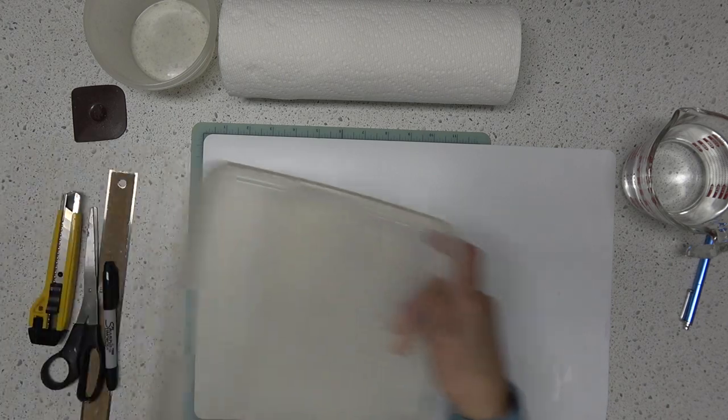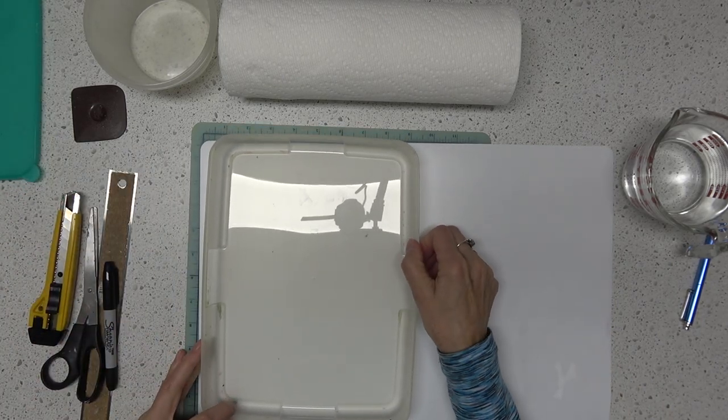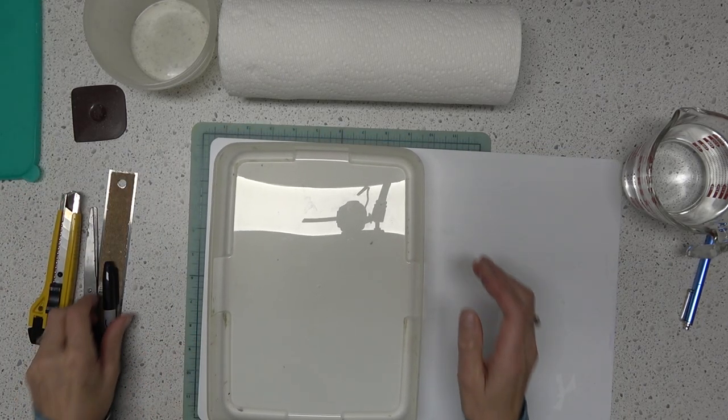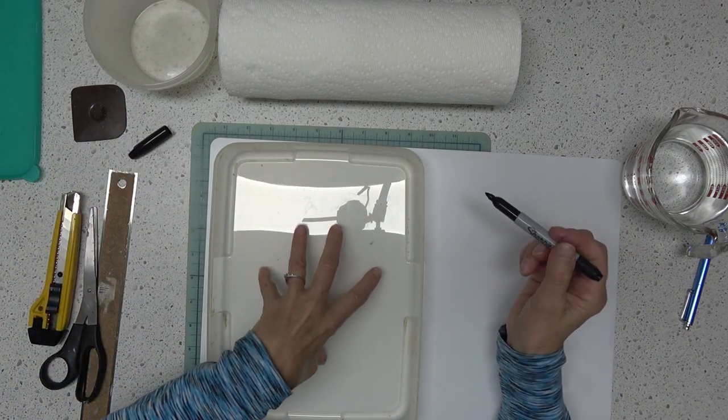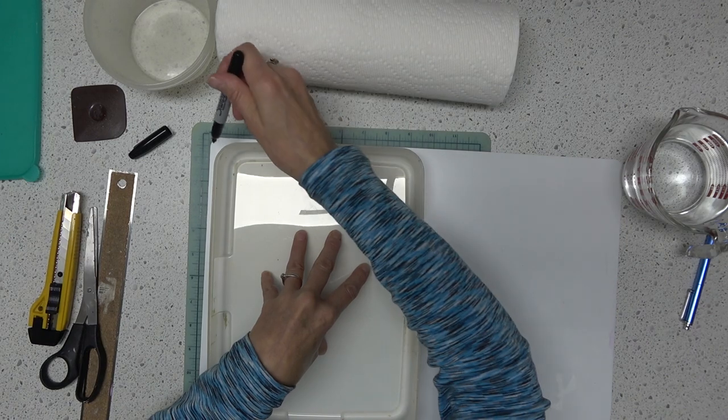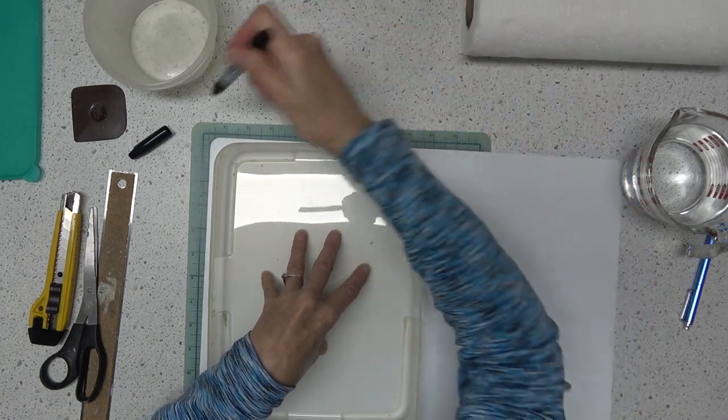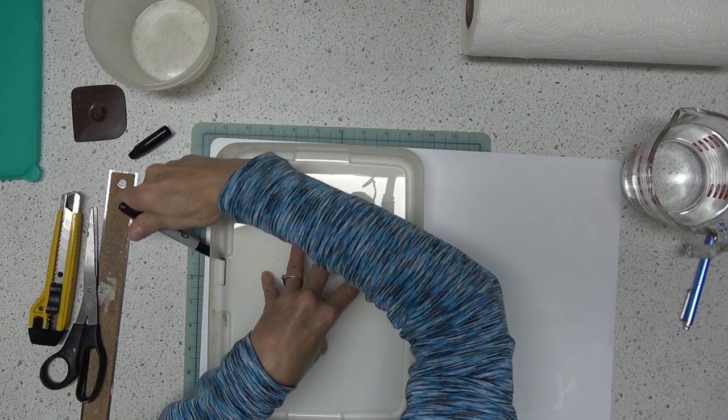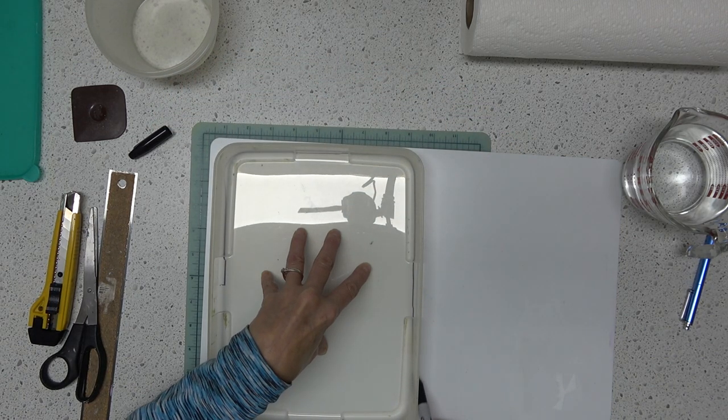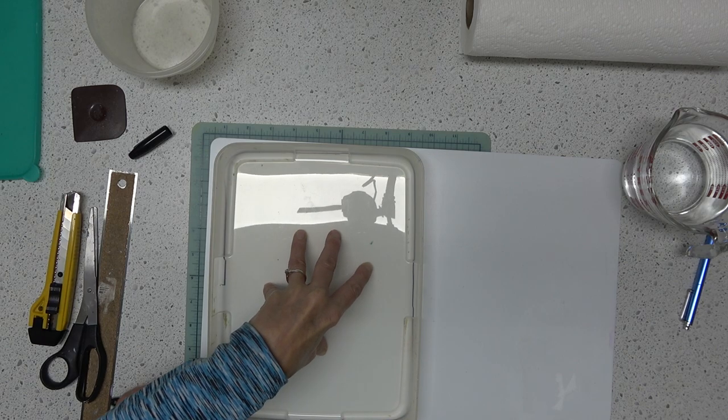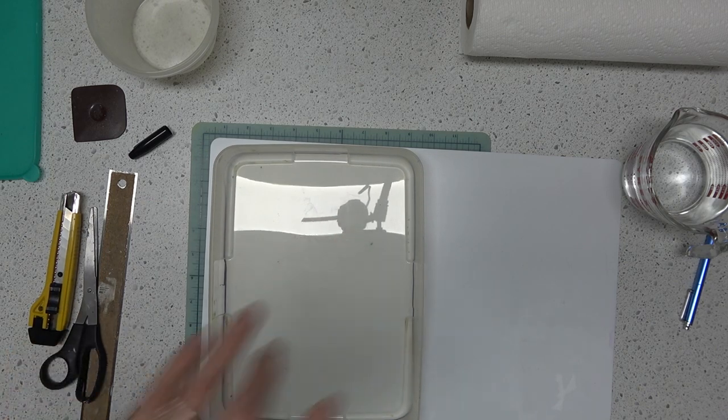So the easiest way to do this is to trace the bottom of your container, and I'm just going to hold it down and simply go around. There we go.